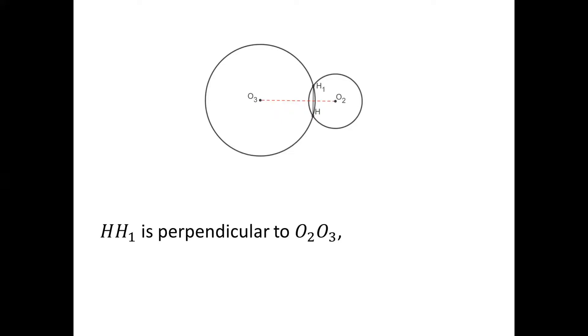First, we know H1H is perpendicular to O2O3. O2 and O3 are the centers of the two circles. They are connected forming a symmetric axis of the picture, and H and H1 are symmetric to the axis.